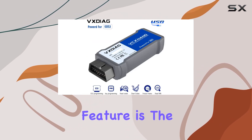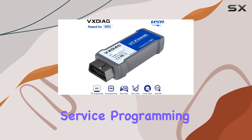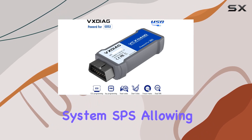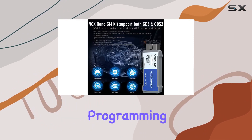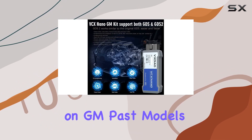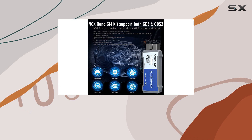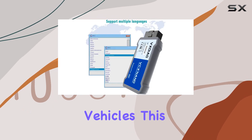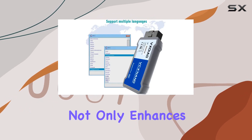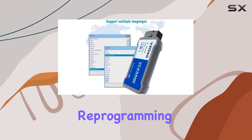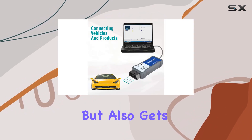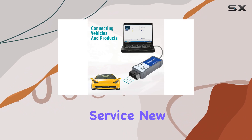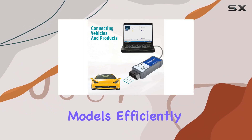One standout feature is the Service Programming System (SPS), allowing pass-through programming on GM PASS models and Global A vehicles. This not only enhances reprogramming speed by 20 to 70 percent, but also gets you ready to service new models efficiently.